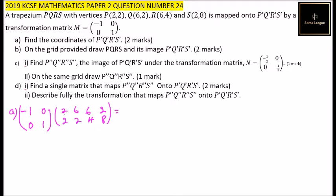You learned how to multiply matrices in form three. Minus one times two gives minus two. We are multiplying the first row by minus one, so we get minus six, minus six, and minus two. For the second row: zero times two is zero, one times two is two, so zero plus two is two. Multiplying the second row by one, it repeats itself, giving us two, four, and eight.